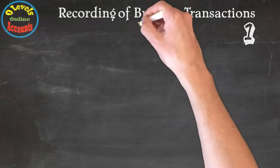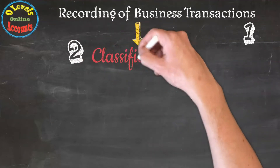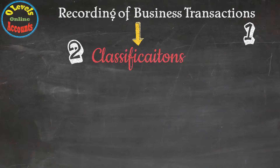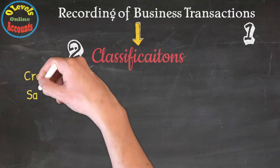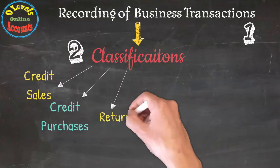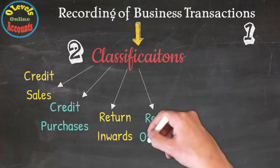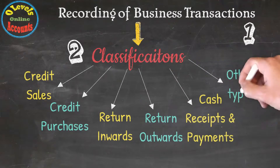After that, we have a second stage, which is Classification. In this section, we will classify all transactions which were incurred in the business. The classifications are as follows: Credit Sales, Credit Purchases, Return Inwards, Return Outwards, Cash Receipts and Payments, and other types.